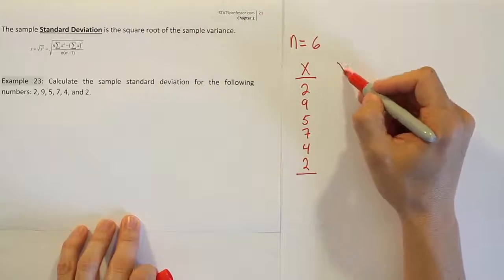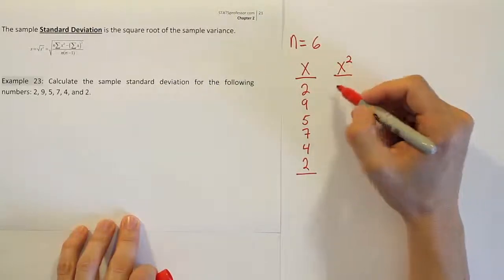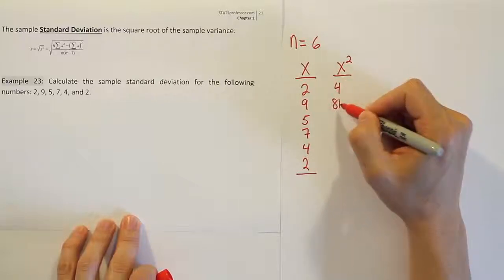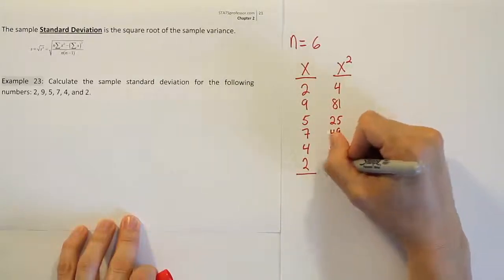You're going to do the next column by creating something called x squared. So you're going to square all these values: 4, 81, 25, 49, 16, and 4.